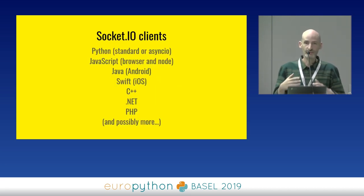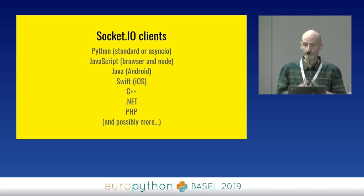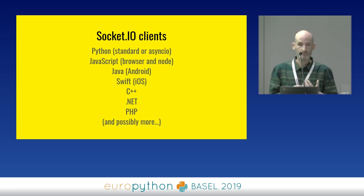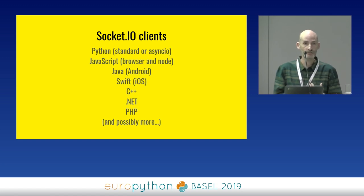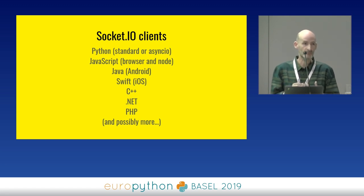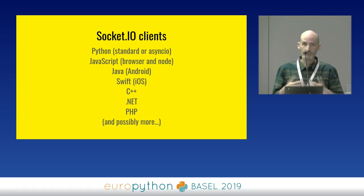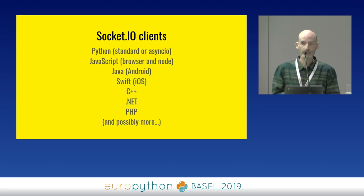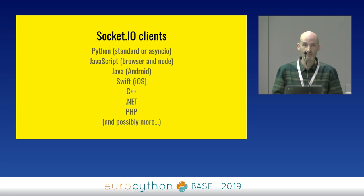Just so that you don't think this is an obscure thing that nobody knows about, Socket.IO clients are available for most platforms. There's the Python one, which comes in two variants — you can use it in standard Python and Async.IO. There's JavaScript, which is the reference implementation that was the first, and runs in the browser or in Node. All the mobile platforms have it, and I'm sure there are more that I don't even know about.